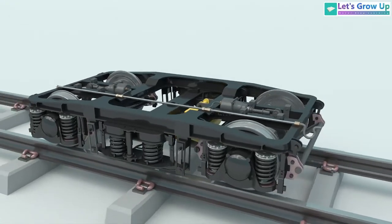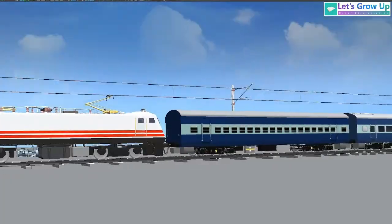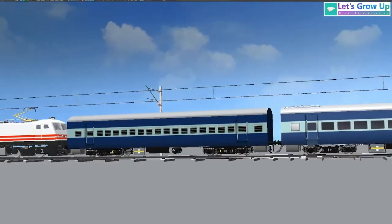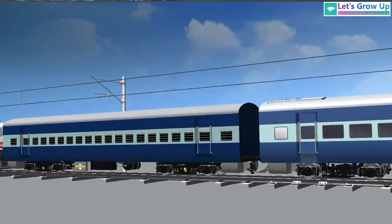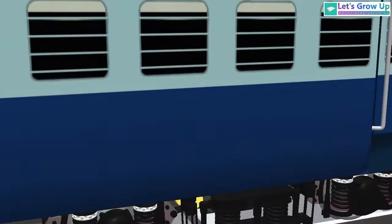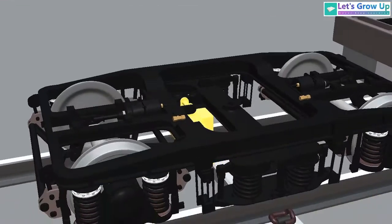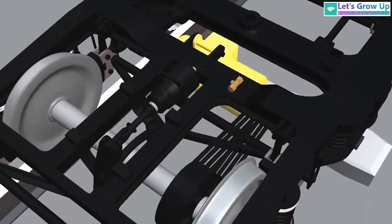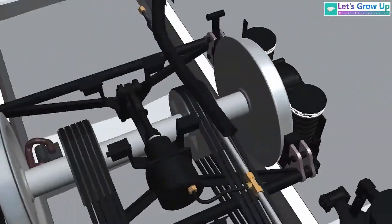Today, I will share a visualization of how these systems work in both AC and non-AC coaches. When you look at the undercarriage of these coaches, the first thing you'll notice is the difference in the size and design of the alternators.